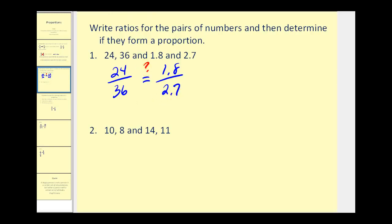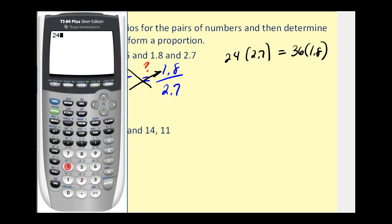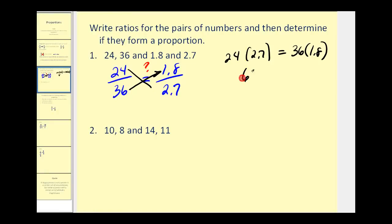So to see if this is true, we cross multiply. 24 times 2.7 must equal 36 times 1.8 if this forms a proportion. Let's go ahead and see if it does. 24 times 2.7 and 36 times 1.8. They're either equal or not. And we can see they're both equal to 64.8. Therefore, this is a proportion.